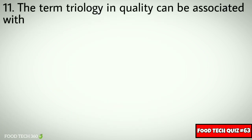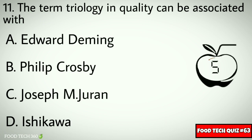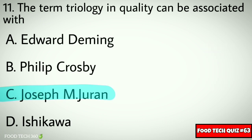Question No. 11. The term 'trilogy' in quality can be associated with: Options: A. Edward Deming, B. Philip Crosby, C. Joseph M. Juran, D. Ishikawa. Correct answer: C. Joseph M. Juran.